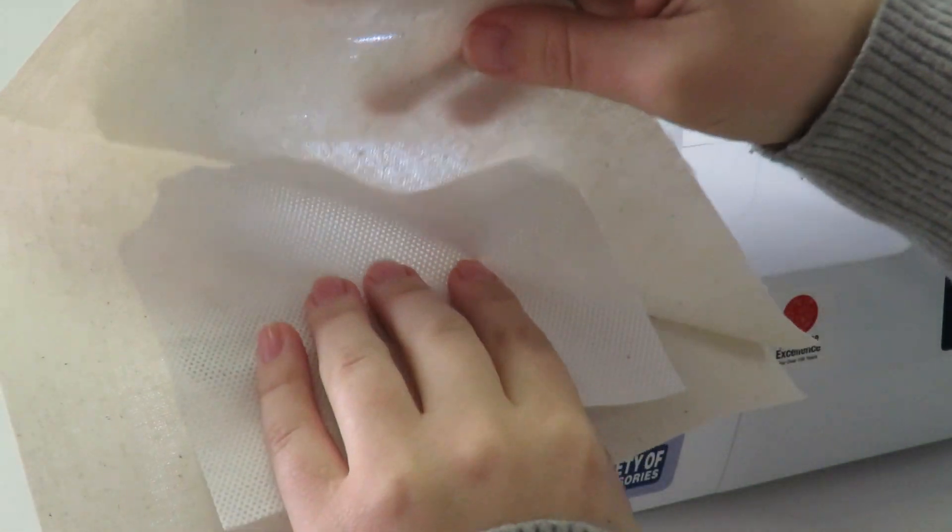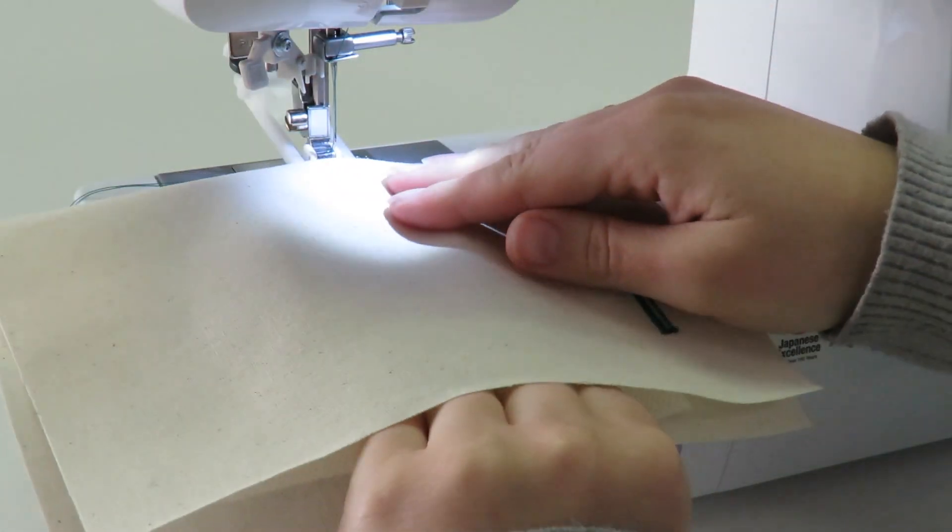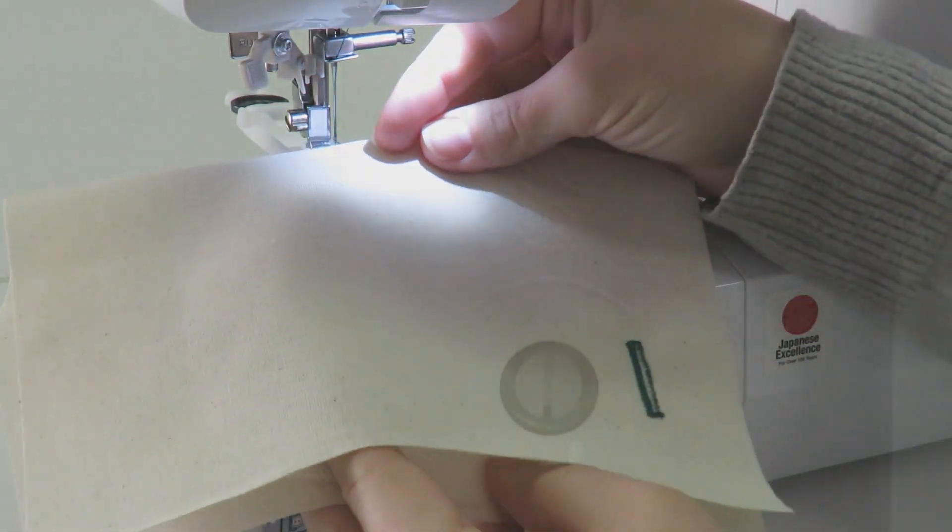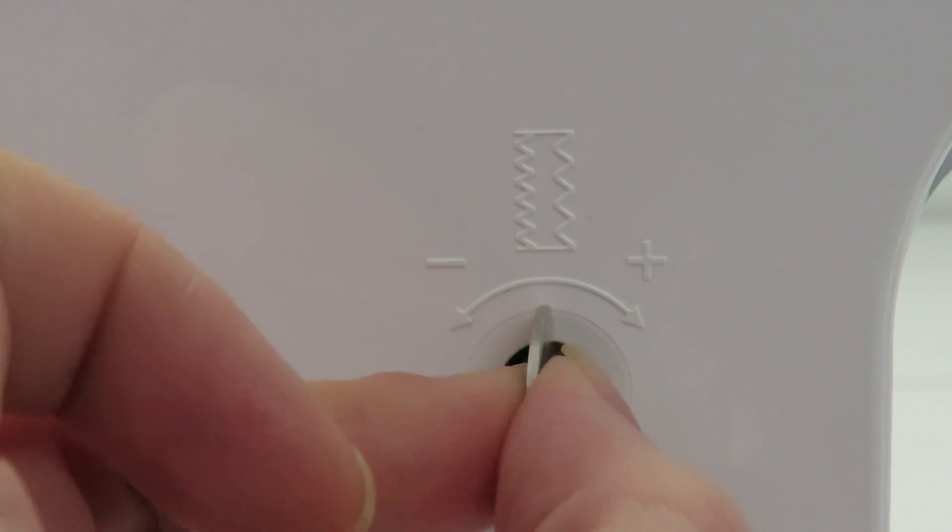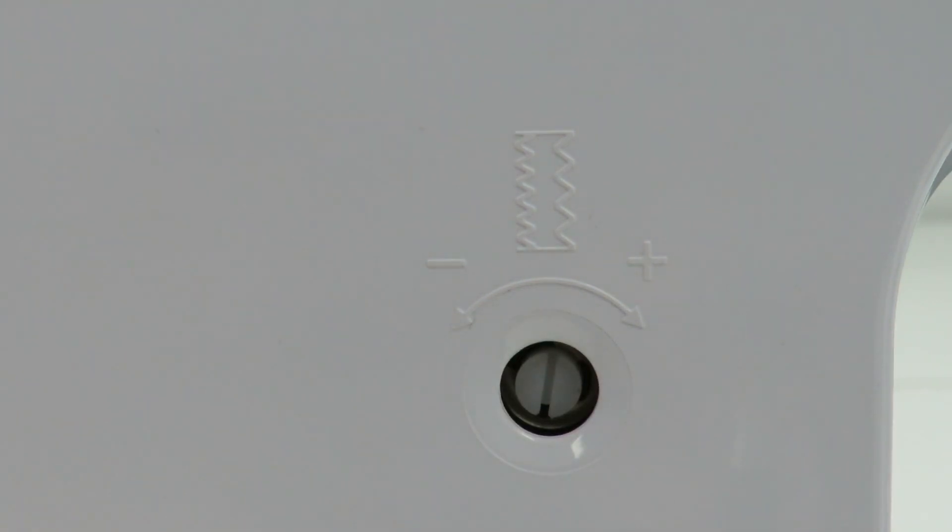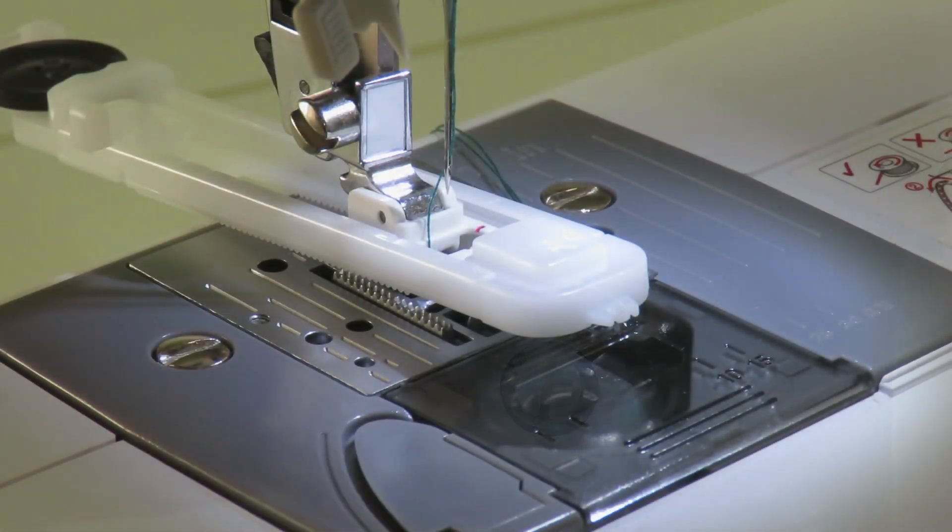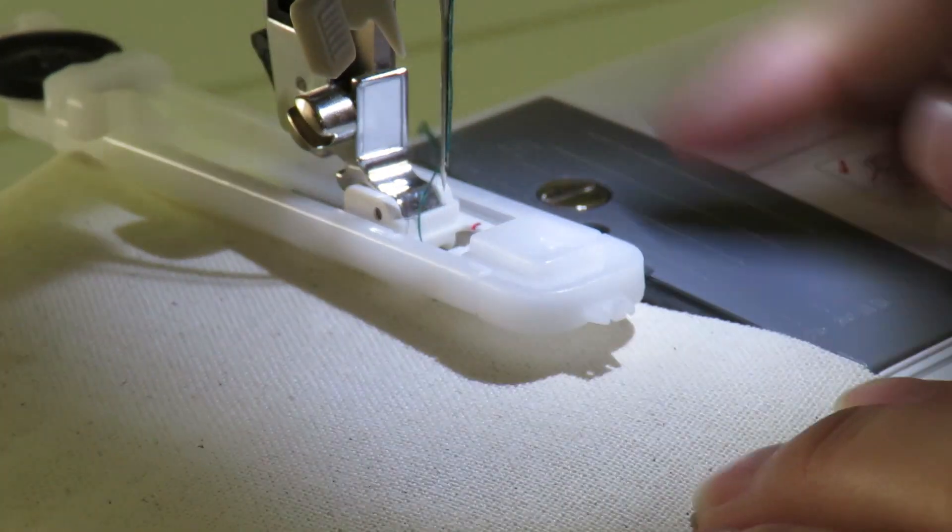...out the zigzag in both legs, make sure to add a stabilizer between your two layers of fabric and turn the screw at the back of your machine to the right, just past the center line, to adjust the right leg stitch length of the buttonhole.